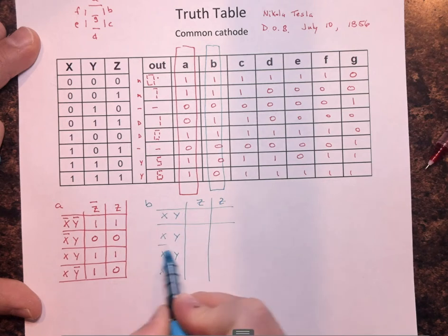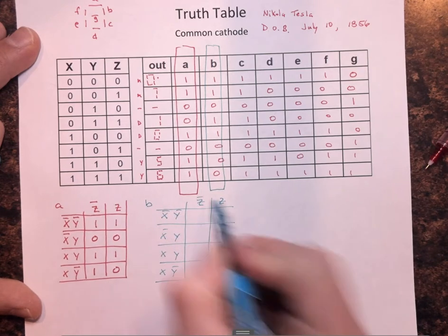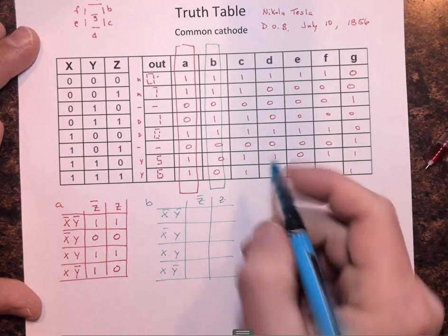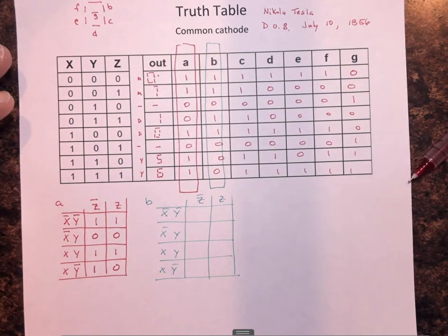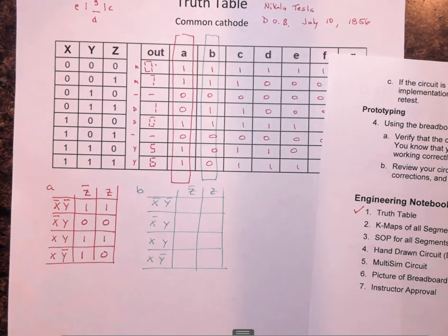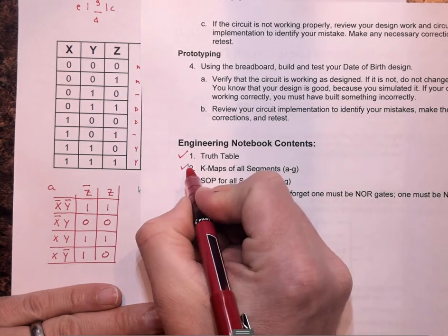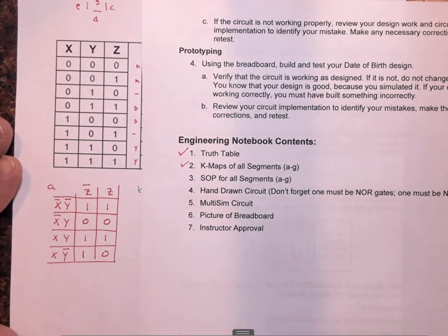But for the project, I just want you to see that you're going to have seven K-maps. And you're going to go through and fill that in. That'll complete step two when you've done that.